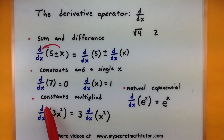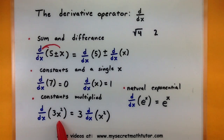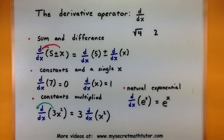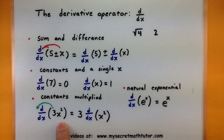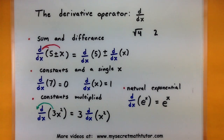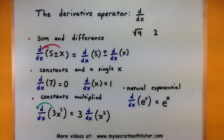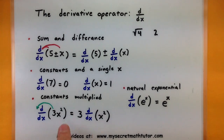We also have a rule for when constants are multiplied by something. Think of 3 multiplied by x squared. In a situation like this we can move that constant out in front of our derivative operator, so we're looking at 3 multiplied by the derivative of everything else. This looks similar to the constant rule, but they are different. In the constant rule we have a constant all by itself; here it's a constant multiplied by something, so it moves out front.